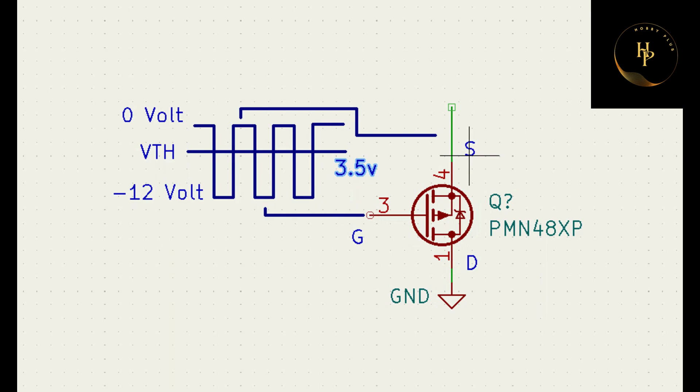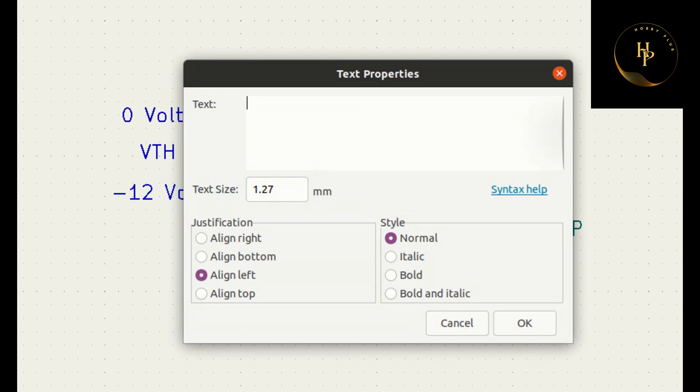That means, if I write here, threshold voltage, V threshold voltage. So, gate voltage is equal to 3.5 volt.